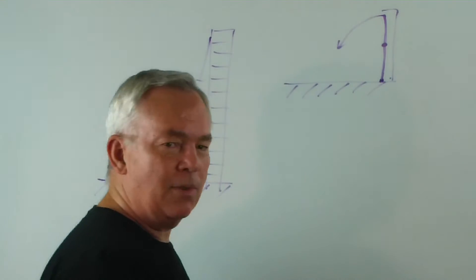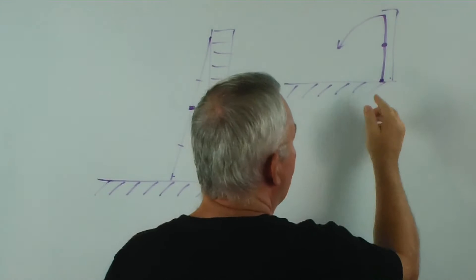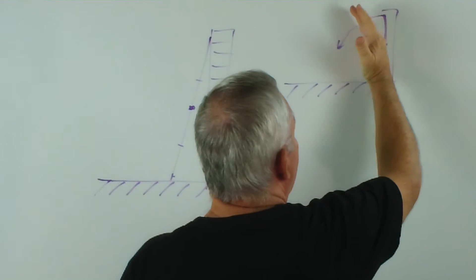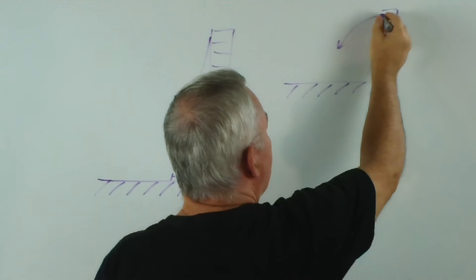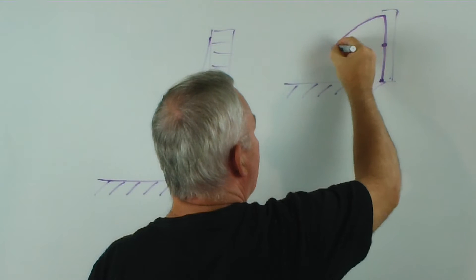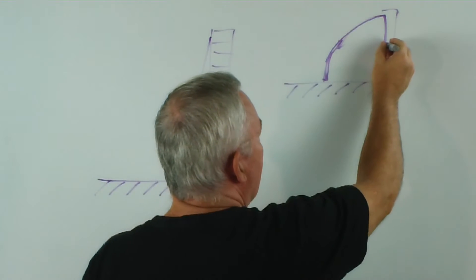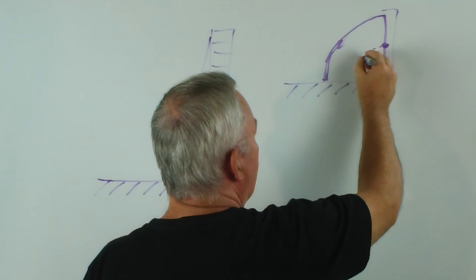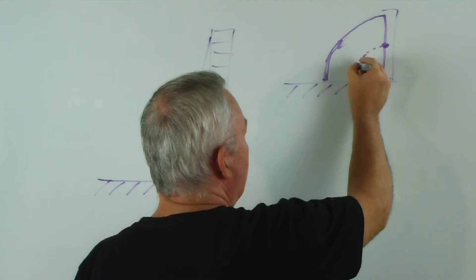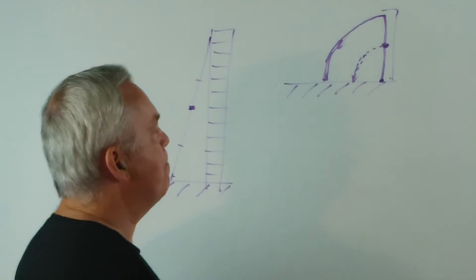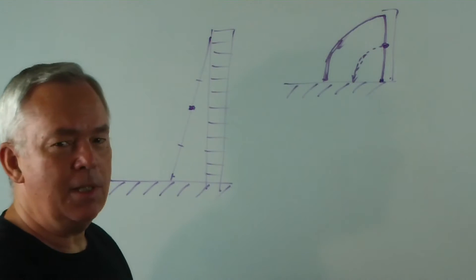provided the base of the ladder stayed at the base of the wall, that the ladder would fall out, the end of the ladder would follow an arc forming a quarter of a circle, and this point here would also follow a circular path. That's quite easy.